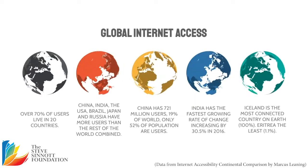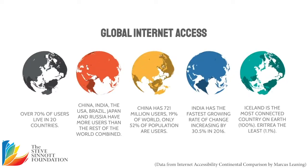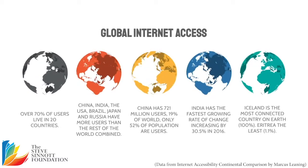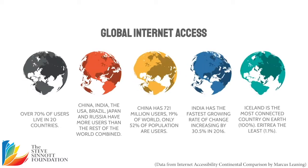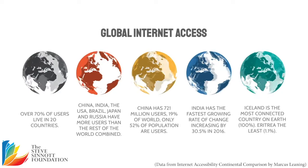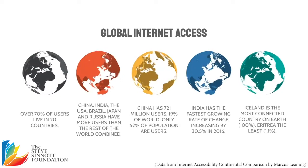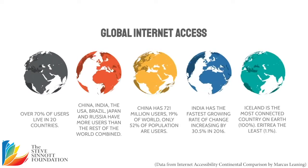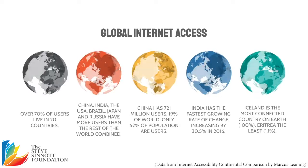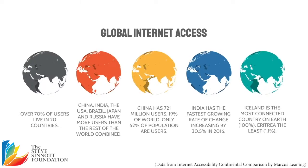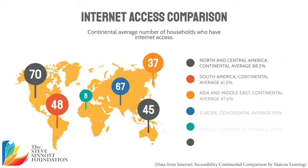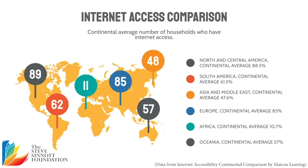Only 52% of the world population uses the internet and 19% of them are in China. India has the fastest growing number of users, and Iceland is the most connected country on earth with 100% users, and Eritrea the least with just 1.1%. Across the globe, the average internet use varies from the African continent where